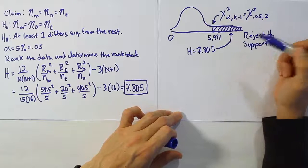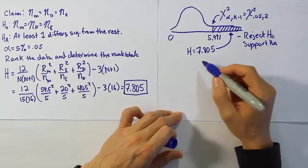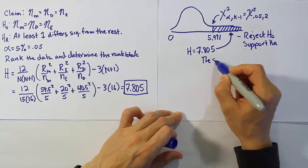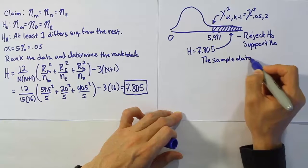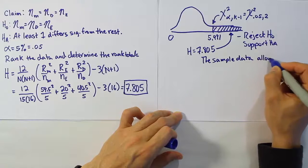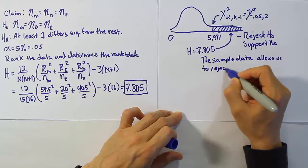Now looking at our claim, our claim is H0, so we're going to say that we reject the claim. So the sample data allows us to reject the claim.